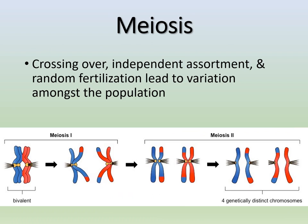We talked about crossing over and independent assortment as our two chances for variation during meiosis I, and then we also have the chance of variation at fertilization. These three big chances of variation cause a lot of differences in our population. If you look at the four gametes produced, each one is genetically distinct — four genetically distinct cells at the end of meiosis — because of all the crossover and independent assortment. That gives you a huge possibility of variation, especially during fertilization.